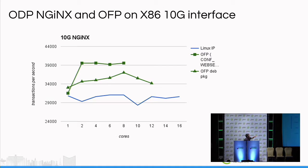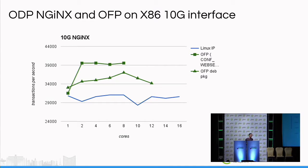We ran those tests. The blue line at the bottom is NGINX running on top of the Linux IP stack, which doesn't look quite right — we knew we made something wrong with the measurements, but we wanted to put it on the screen. The other two lines are NGINX running on top of OFP, ported to run on OFP by the OpenFastPath team. The top line is an optimized version for the web server, which flattens at around 40,000 packets per second. We believe this is because the client cannot generate enough traffic, as we are using quite slow servers.